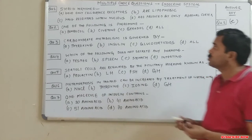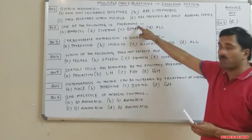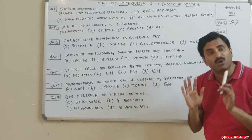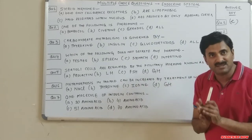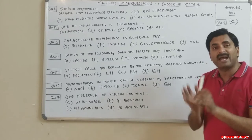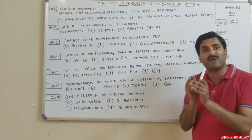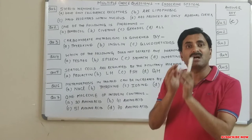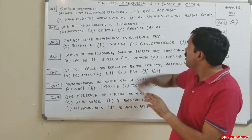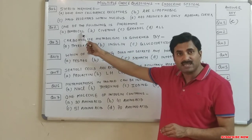Question number two: which of the following is a pheromone? Pheromone hormones are not secreted by the endocrine glands — they are volatile hormones secreted by many organisms to attract the opposite sex. The options include bombycol — is bombycol a pheromone?